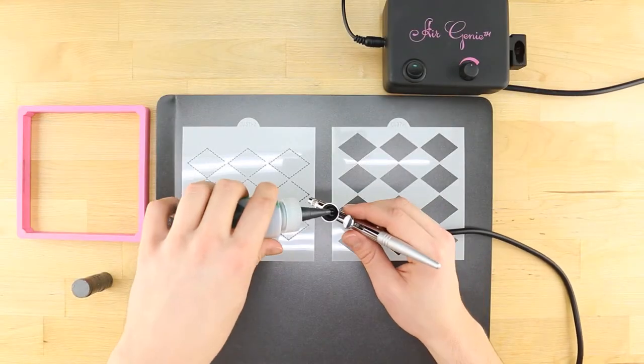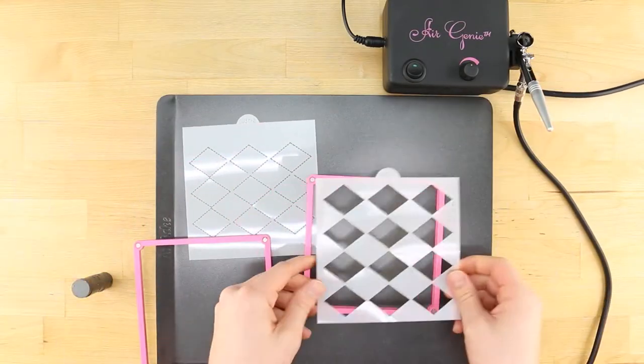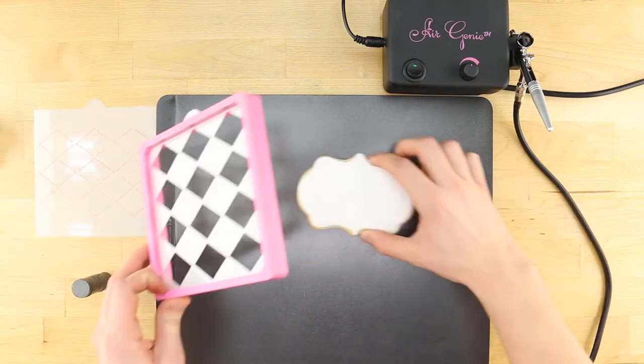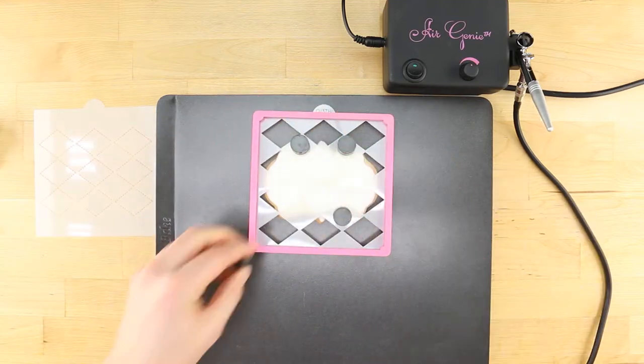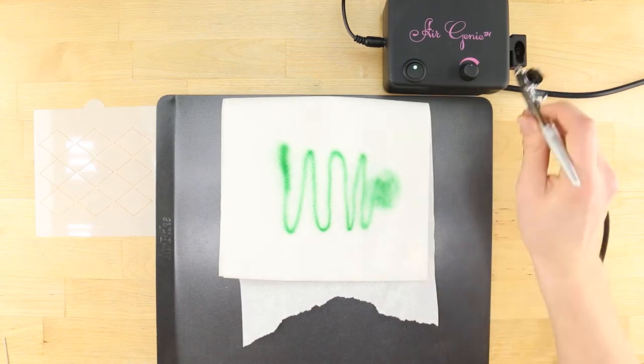Load Amerimist food coloring into the Air Genie airbrush. Put the first stencil into the Stencil Genie and place on the cookie. Place cookie magnets around the edges of the cookie, then test the airbrush on a piece of paper towel.